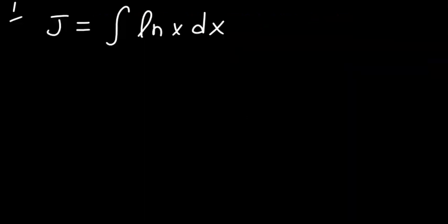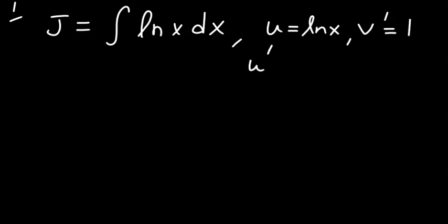Let's look at the following integral. We can solve this integral using integration by parts. So let's first set u and v prime. We can set natural log of x to be u and v prime to be 1.